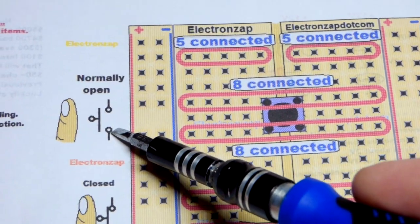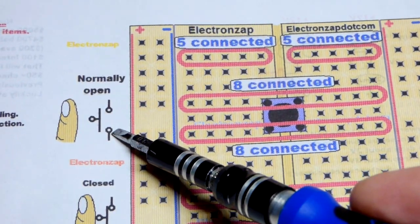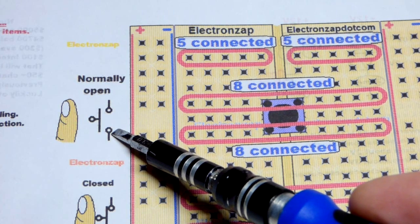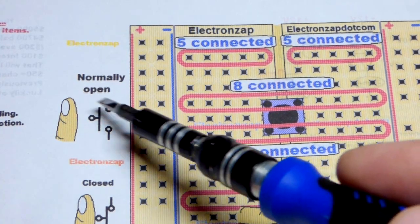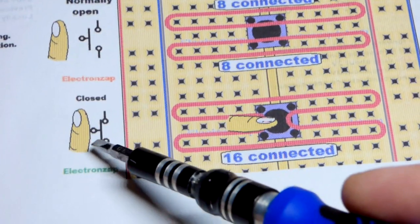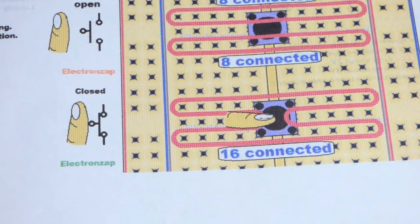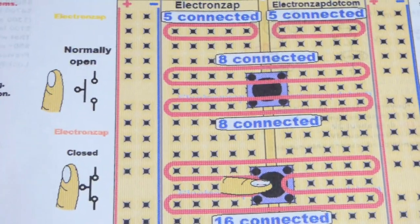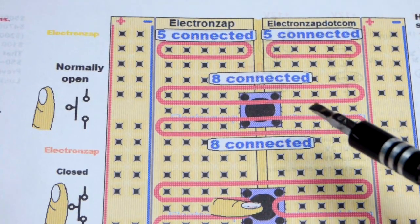So most of them are normally open, all the ones I have are normally open. This is the schematic symbol for a normally open push-button switch. There's usually not a hovering finger. I added that just to illustrate the electrical connection when you push on the switch.